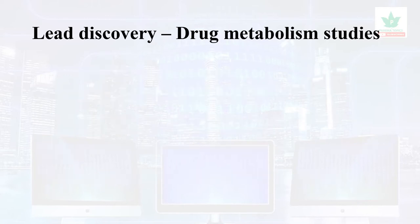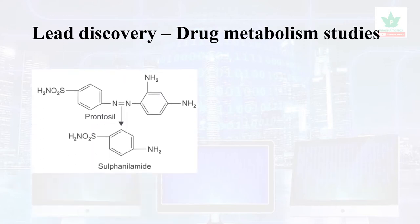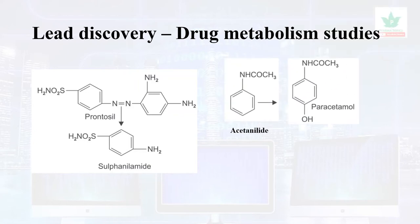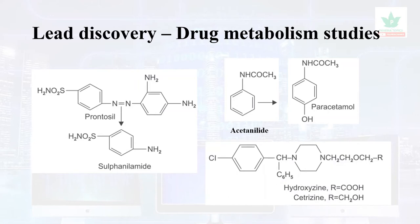Lead discovery based on drug metabolism studies: for example, prontosil was an earlier lead molecule — when metabolized, it gave rise to sulfanilamide, or sulfa compounds, used as antibacterials. Acetanilide's metabolite is paracetamol, widely used as a COX-3 inhibitor to relieve fever. Hydroxyzine, a first-generation antihistamine, has the metabolite cetirizine, which lacks CNS adverse effects and is a classical second-generation antihistamine.